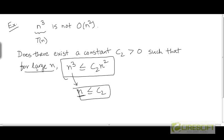This does not apply for all values of n that are large. So basically this needs to apply for all n beyond a certain threshold called n₀. And clearly that's not going to be true here because no matter what value of c₂ you choose, once n grows beyond c₂, n³ will no longer be less than or equal to c₂ times n².